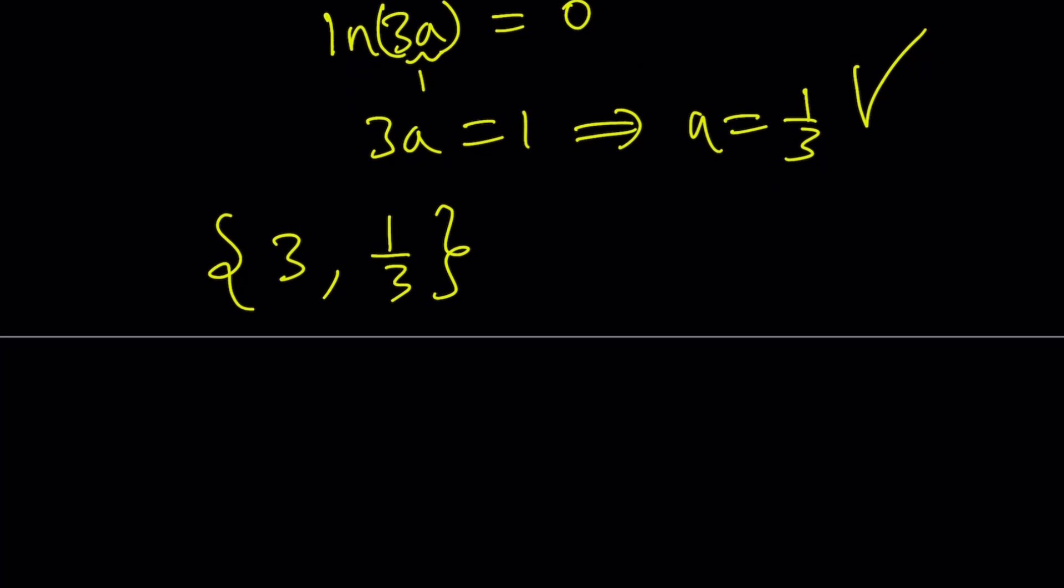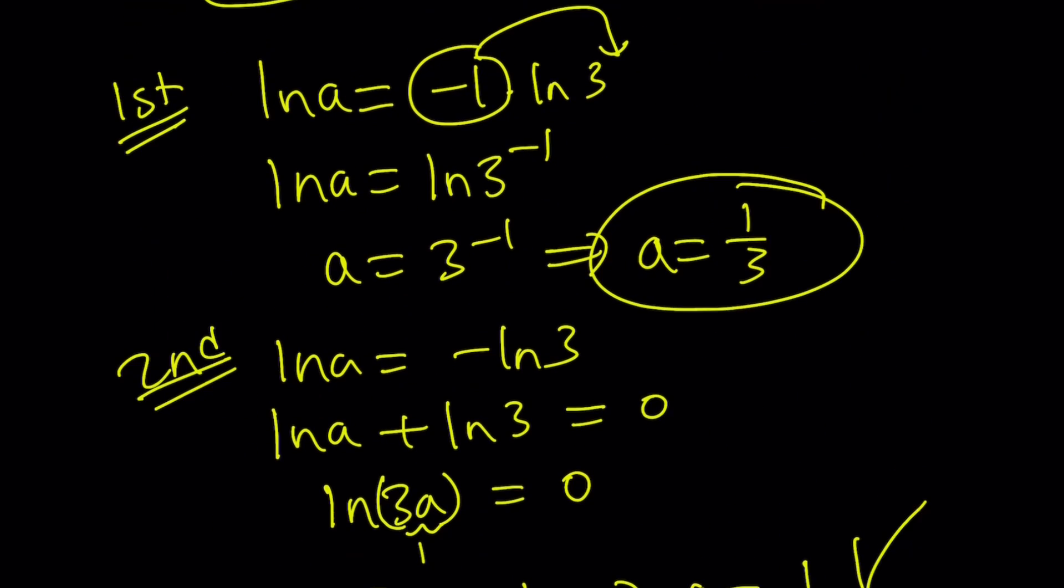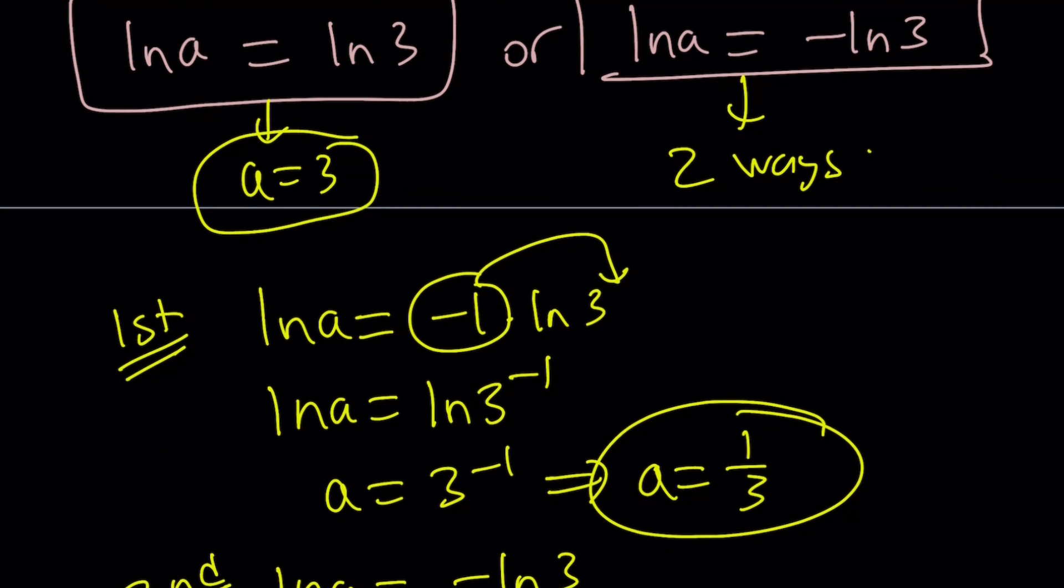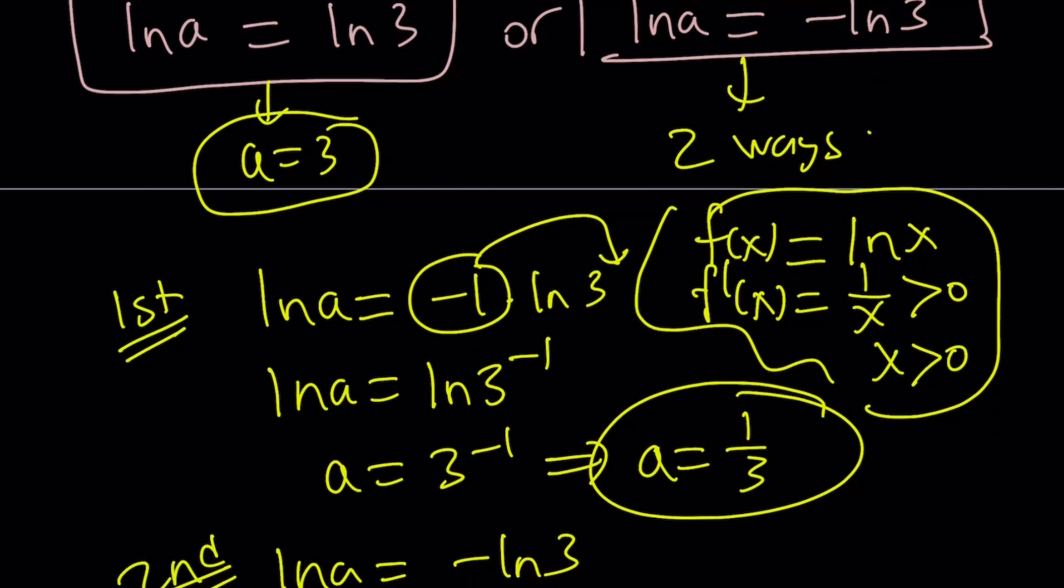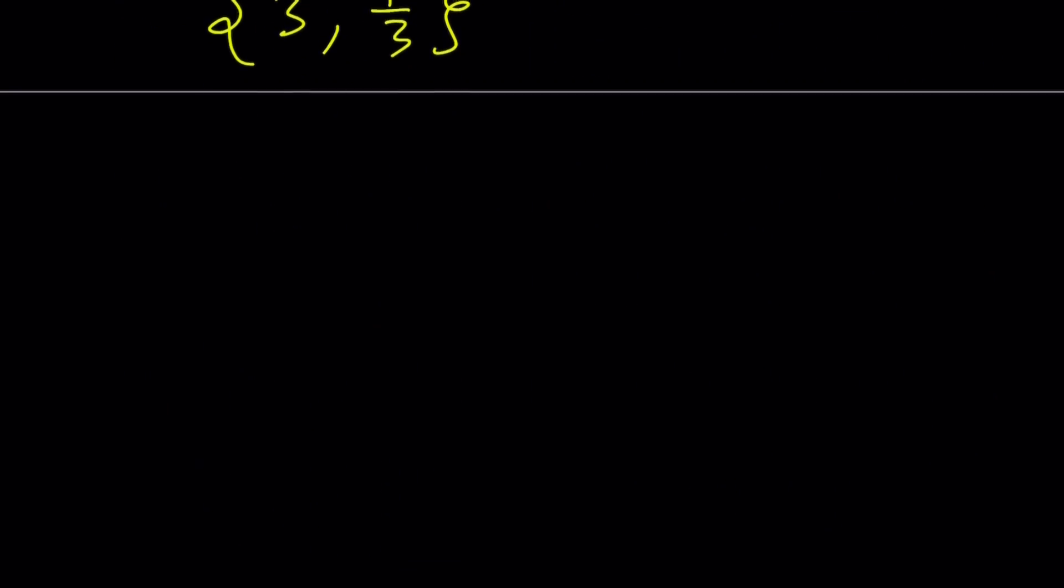Let's check this as a function. And by the way, when I said ln a equals ln 3, we only got one solution. Because if you look at the ln function, ln x, it's always increasing. If you differentiate it, you're going to get 1 over x, which is positive for x greater than 0. And x is always greater than 0 because that's where the ln function is defined for reals.